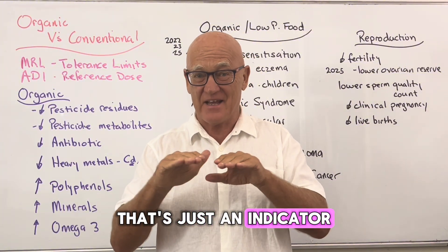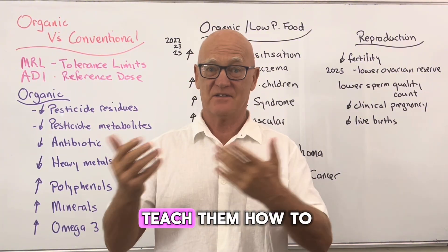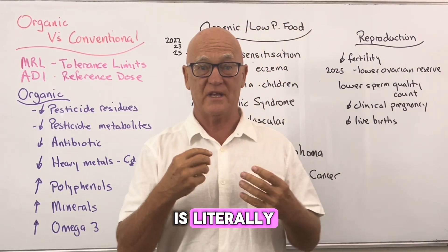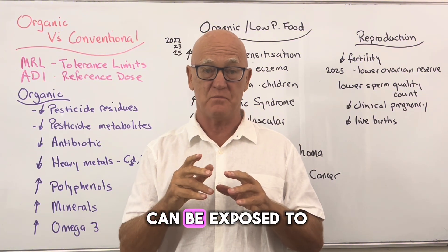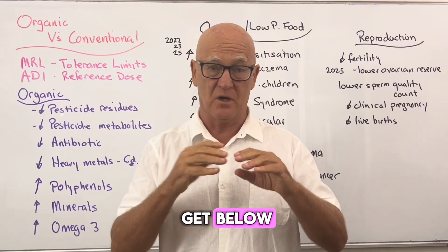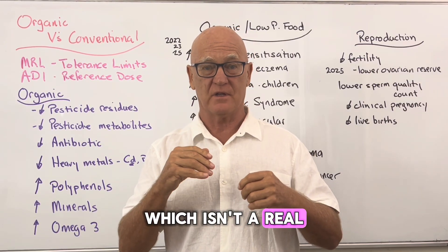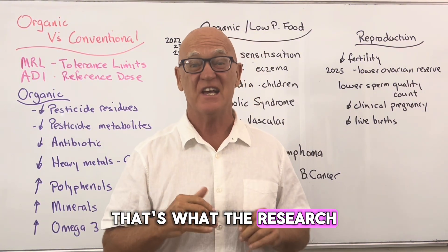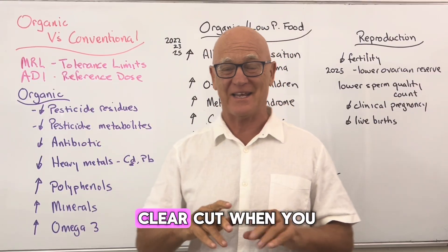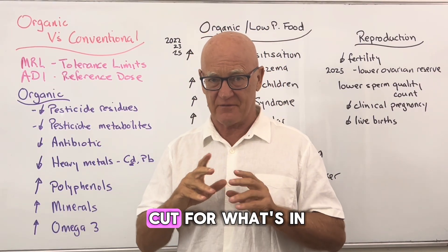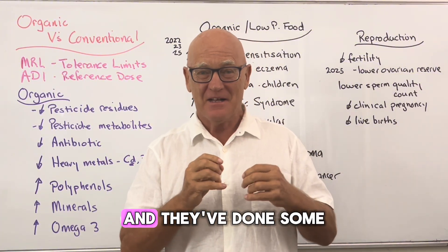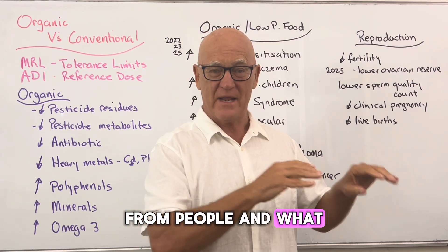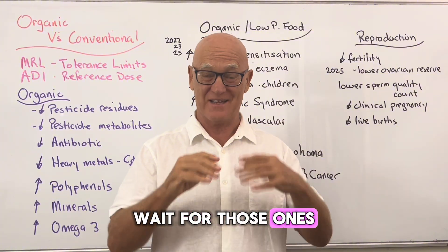MRLs are really just an indicator for farmers and governments to review pesticide use. The Acceptable Daily Intake (ADI) — or in the US, the reference dose — is the amount of a pesticide you can be exposed to over time, below which is considered safer and above which is a real health risk. Safety factors are built in, but the research is showing these thresholds are a genuine health concern, including some fantastic studies over the last five years about removing pesticides from people's diets and what happens.